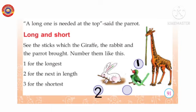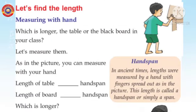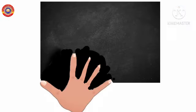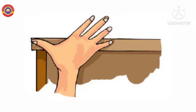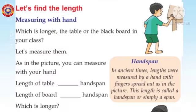Let's find the length. Measuring with hand. Hand span. In ancient times, lengths were measured by a hand with fingers spread out as in the picture. This length is called hand span or simply a span. Which is longer, the table or the blackboard in your class?